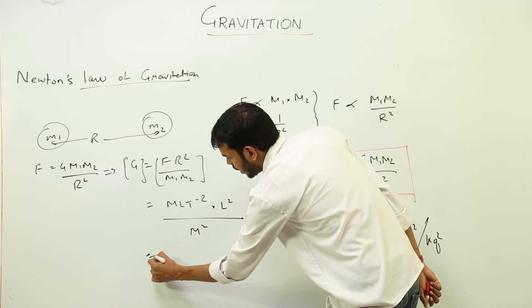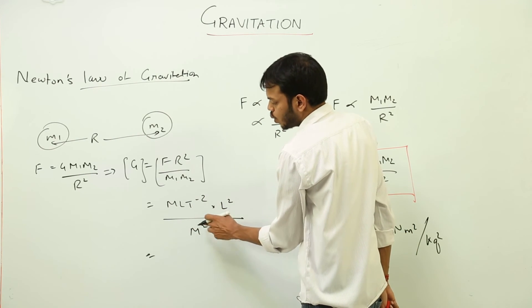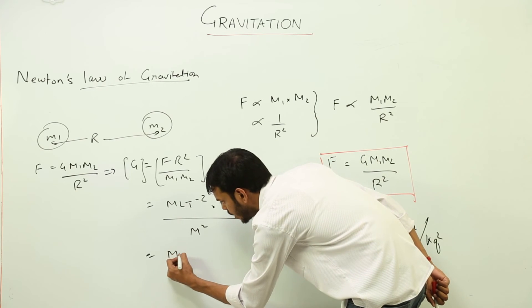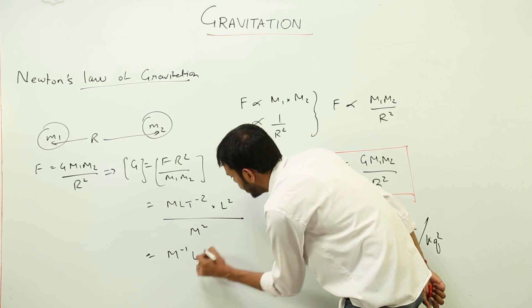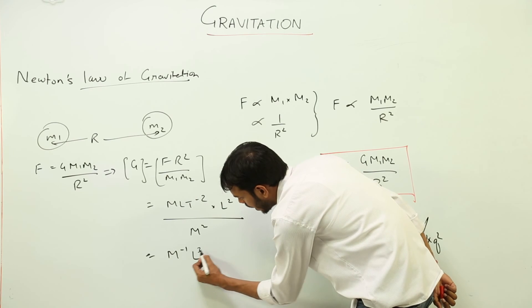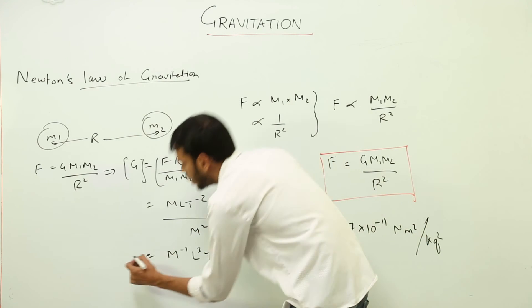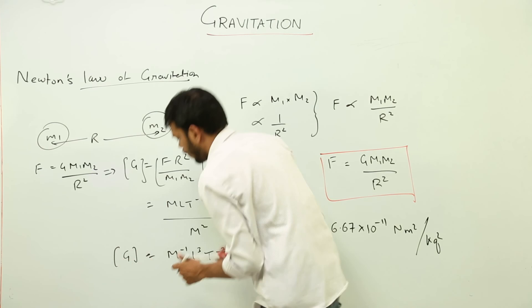So this will give me M1 and M minus 2. So this is giving me M minus 1. Then L2 plus 1, 3. And lastly T minus 2. So this is the dimensional formula of G.